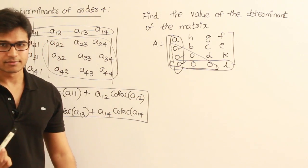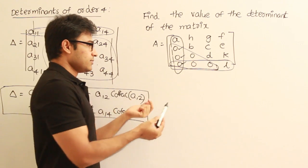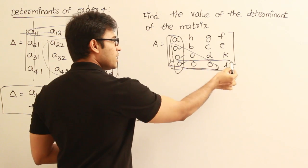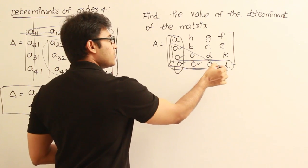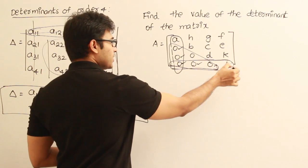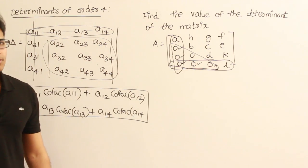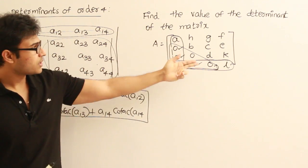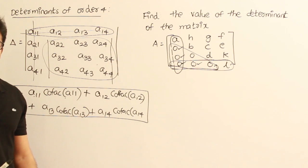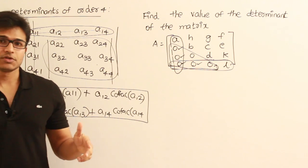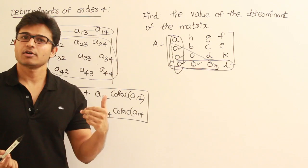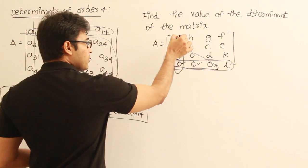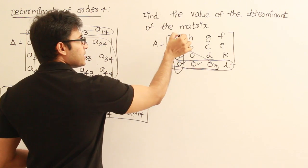So you can directly go and find the cofactor of just one non-zero element, and it is going to be easy. Similarly, for the last row, there is no need to find the cofactor of all elements — only one cofactor is needed. We can go using the first column or the last row and will get the same answer. Let me go with the first column; you can try the last row and verify.